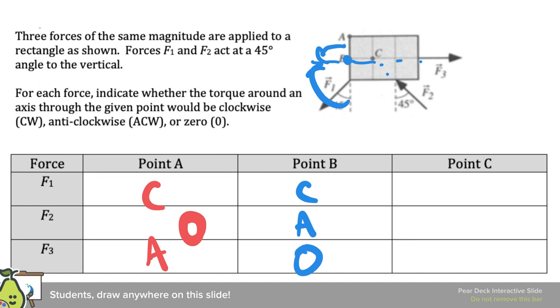And then for C, they all pass through, right? So F1's line of action passes through C, F2's passes through C, and so does F3's, so we get zero torque in all of them.